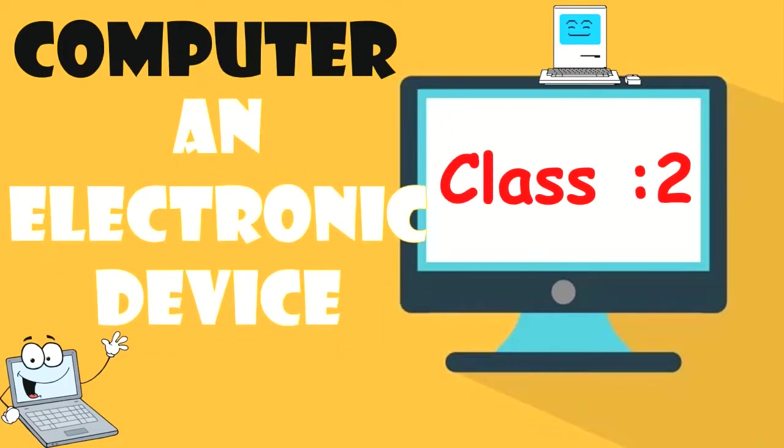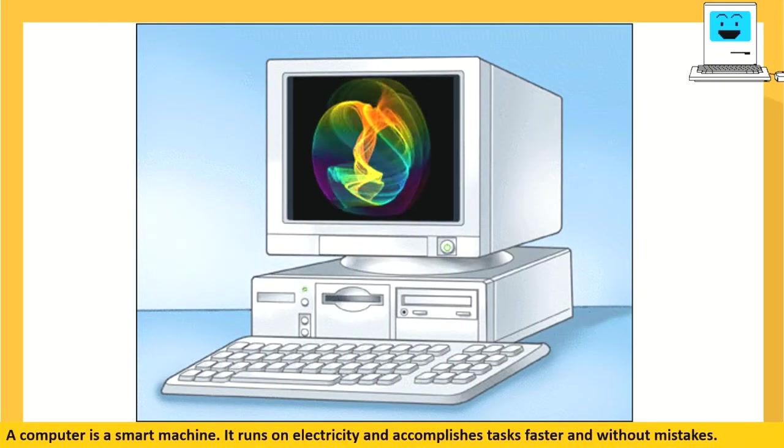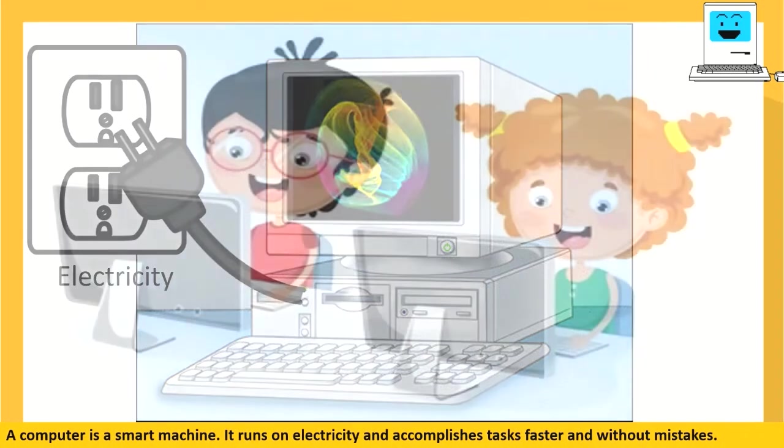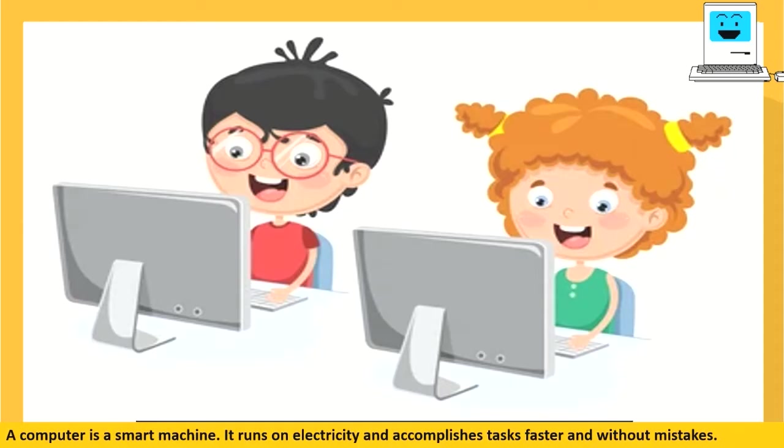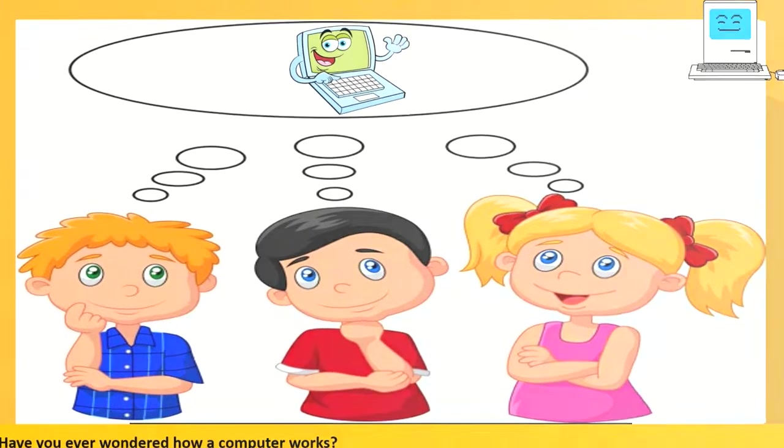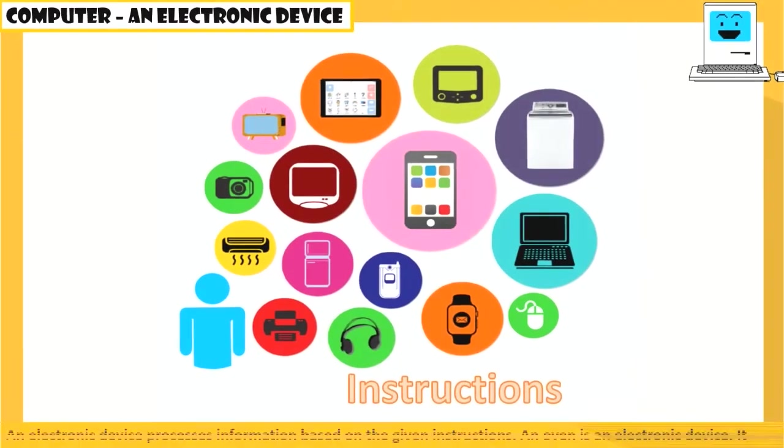Computer: an electronic device. A computer is a smart machine. It runs on electricity and accomplishes tasks faster and without mistakes. Have you ever wondered how a computer works? Let's find out. An electronic device processes information based on the given instructions.